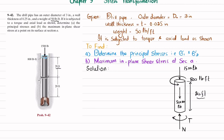Applying the first equation of equilibrium: sum of all forces along the y-direction must equal zero, with upward force taken as positive. The forces are 1500 pounds downward, N upward, and 1000 pounds weight downward. So: minus 1500 minus 1000 plus N equals zero. Therefore, the reaction axial force N equals 2500 pounds.